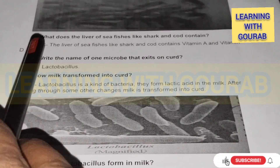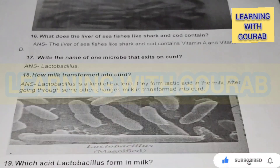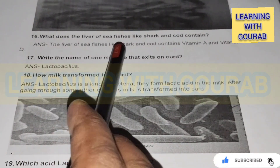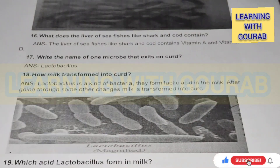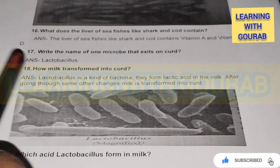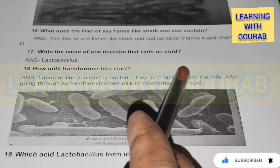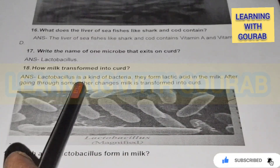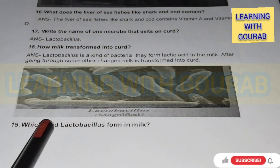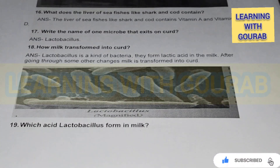Next question: Name one microbe that exists in curd. Answer: Lactobacillus. Next question: How does milk transform into curd? Answer: Lactobacillus is a kind of bacteria that forms lactic acid in the milk, and then milk is transformed into curd.